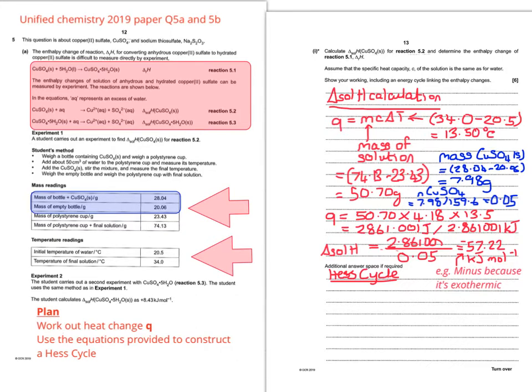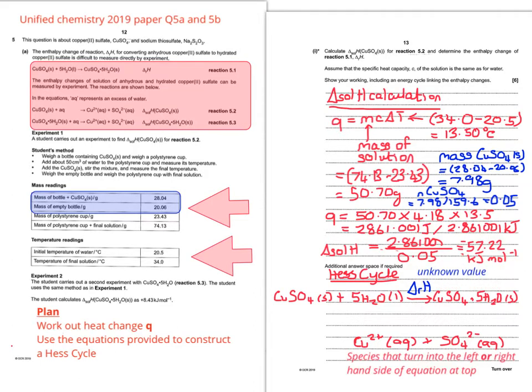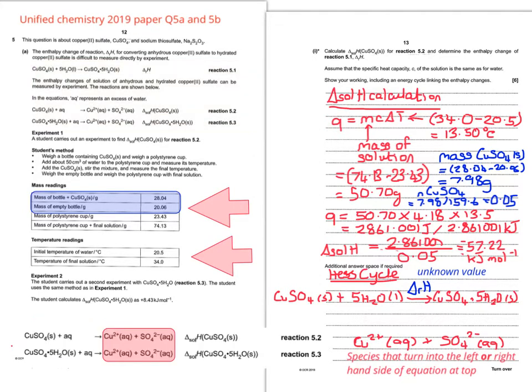So now we can do the Hess cycle. So you start by writing out the reaction on the top that you're not sure of the answer to. That's what they want you to calculate. So the bottom part of your Hess cycle is what the species on either the left or the right hand side of your top equation can turn into. So I'm looking at reaction 5.2 and reaction 5.3. So if we look more closely at reaction 5.2 and reaction 5.3, that's what they have in common. So the arrows have to point downwards towards those products.